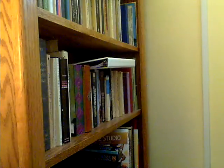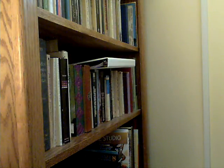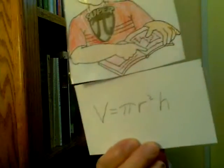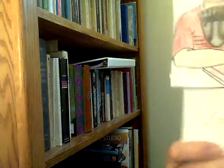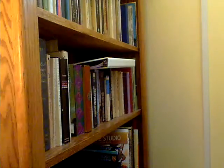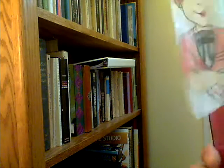For a cylinder, the volume equals pi r squared times h.